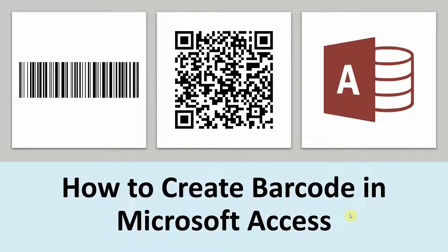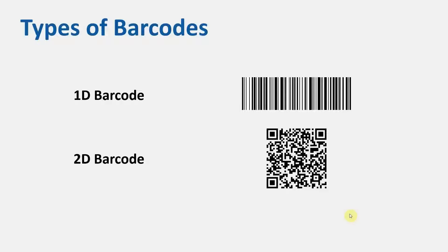Before we get into Microsoft Access and start creating barcodes, let's take a couple of minutes to learn about barcodes. You should know the basics before embedding them into your applications. There are two types of barcodes: 1D barcodes, which are linear barcodes, and 2D barcodes, which are QR codes that are a little more advanced and being used nowadays.